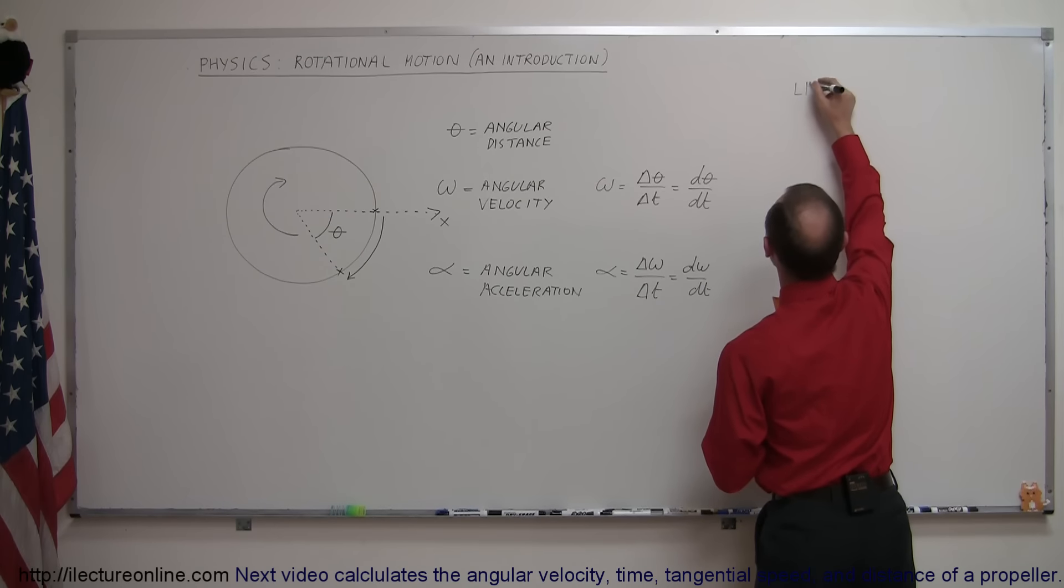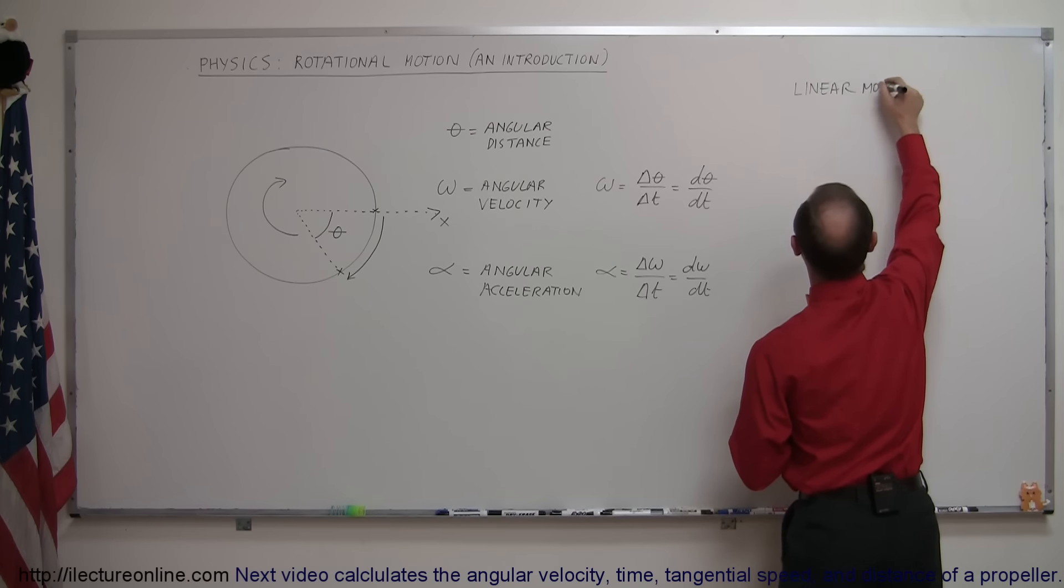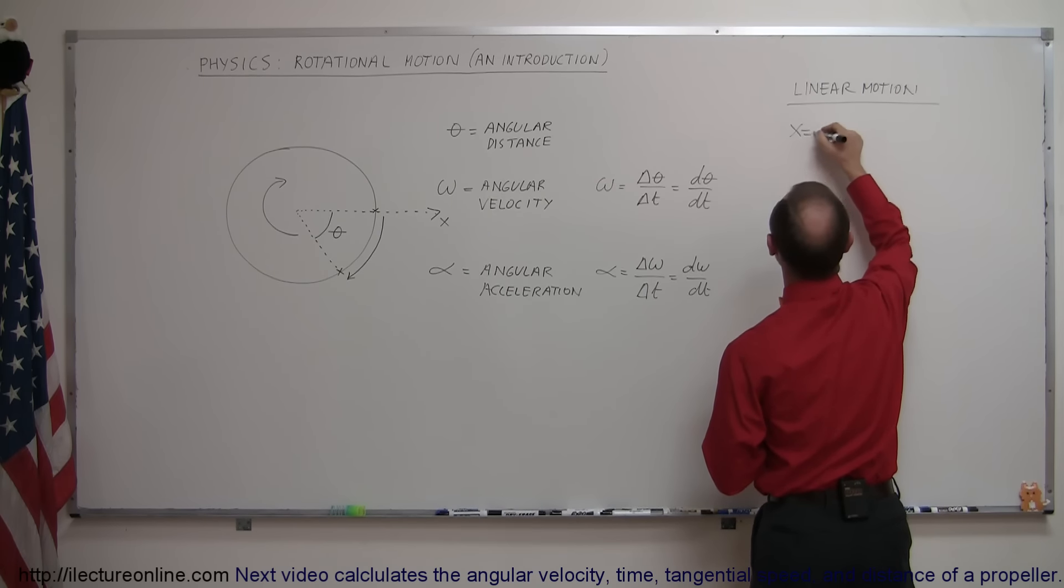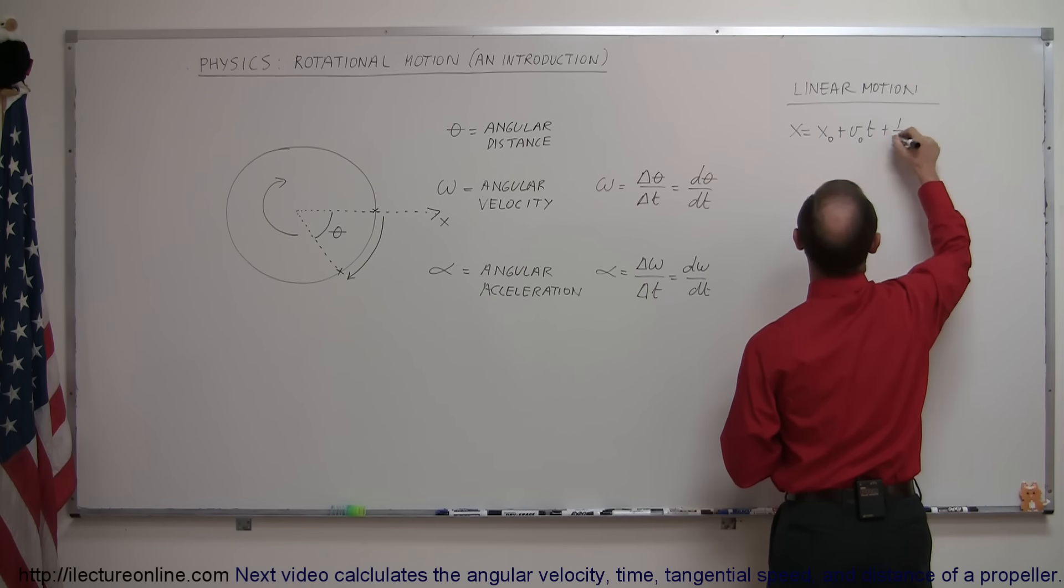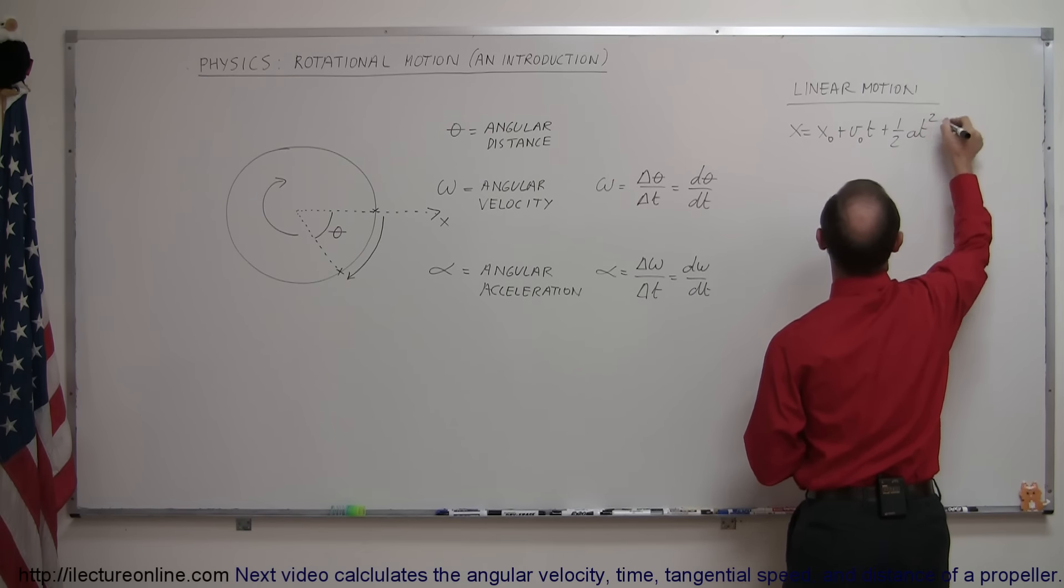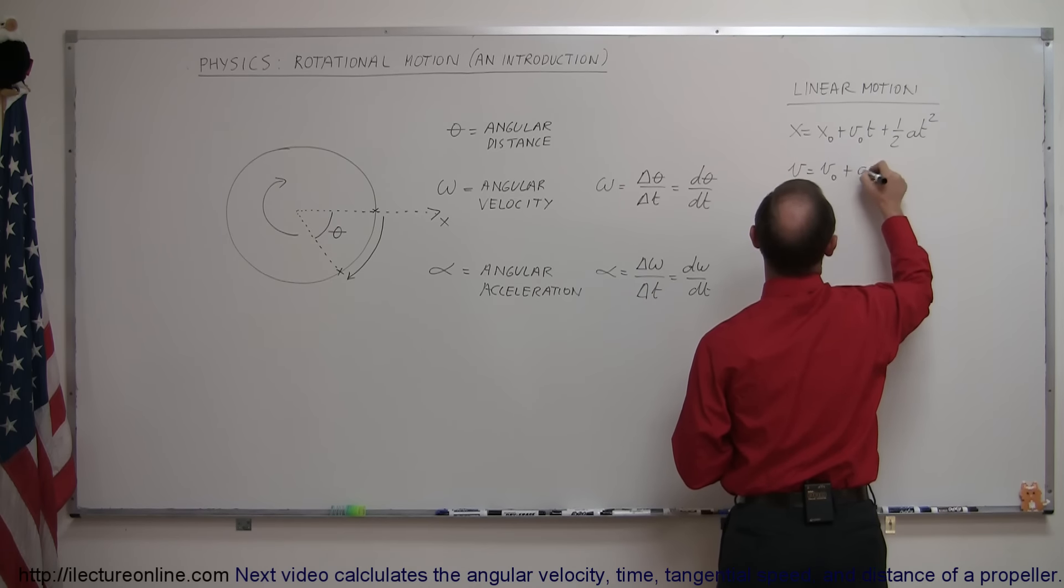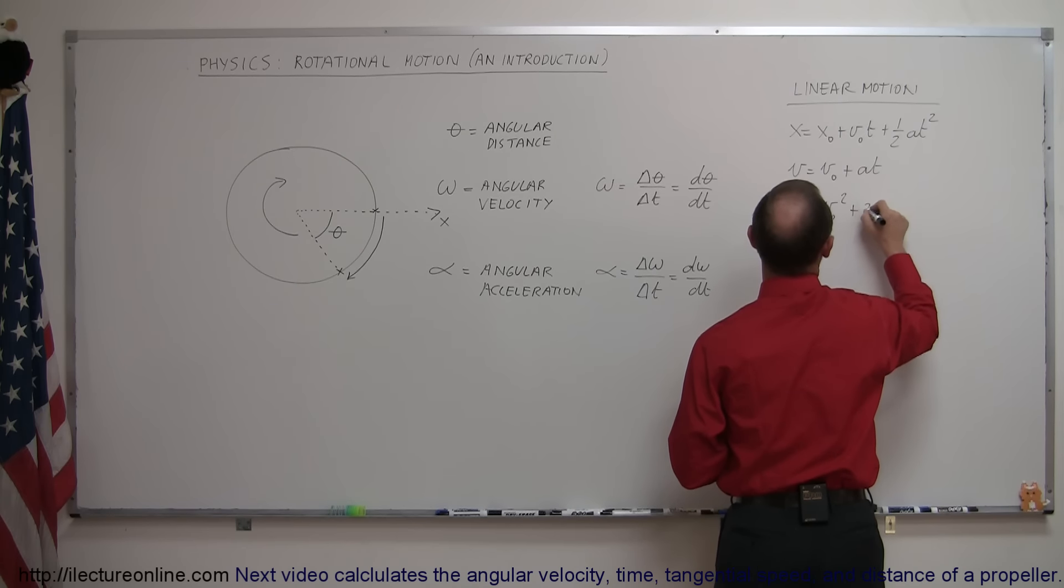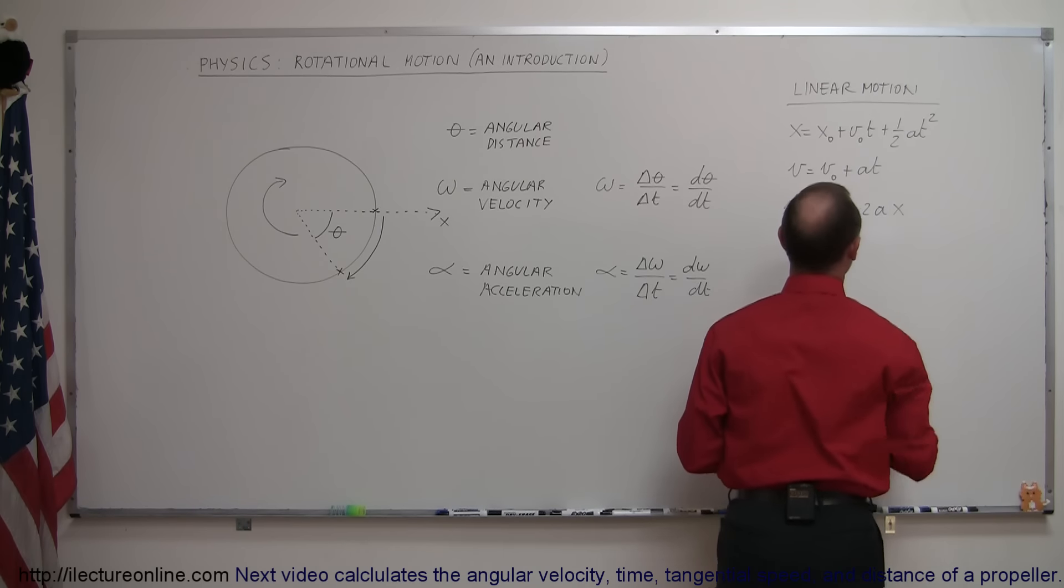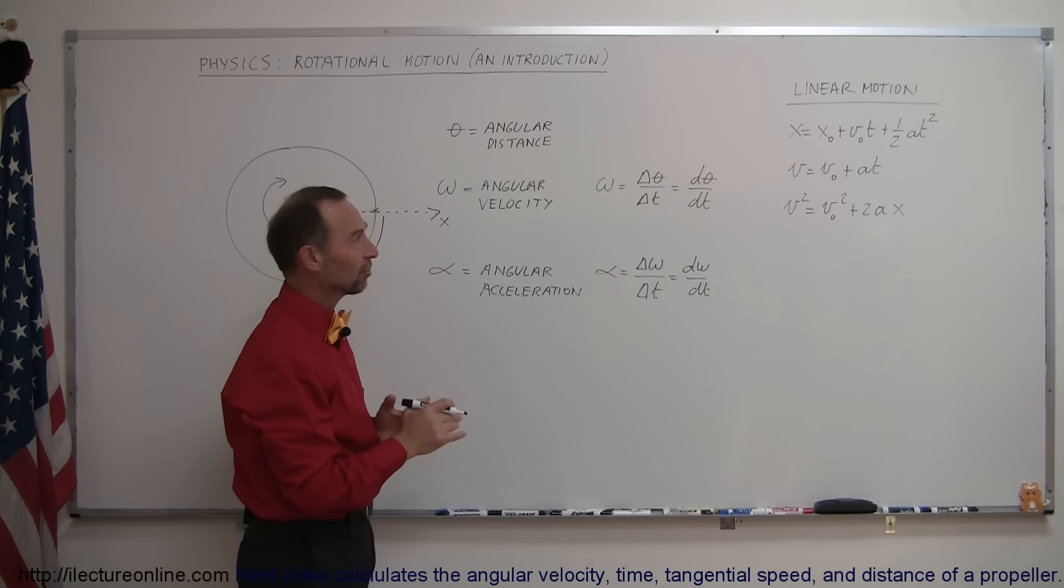So for linear motion, we can write the three equations of kinematics as follows. We can say that x is equal to x sub naught plus v sub naught times t plus one half a t squared, or we can write that v is equal to v sub naught plus a t, or we can write that v squared is equal to v initial squared plus 2ax. Those are the three equations of linear motion called the equations of kinematics.